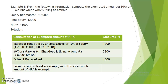For example, from the following information, compute the exempted amount of HRA of Mr. Bhavdeep who is living at Ambala. His salary per month is Rs. 8,000, he is paying a rent of Rs. 2,000, and he is getting a house rent allowance of Rs. 1,000. The solution: we will write computation of exempted amount of HRA with three conditions. Number one — excess of rent paid by Mr. Bhavdeep over 10% of salary: rent paid is Rs. 2,000 and 10% of salary is Rs. 800.